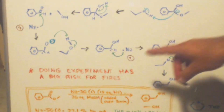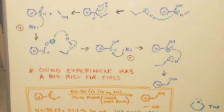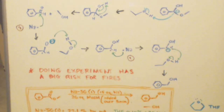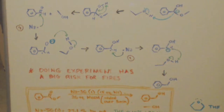Now I want you to read this and look at it very carefully. It says doing this experiment has a big risk for fires. This was the only method of doing an ester reduction to make alcohols before lithium aluminum hydride or sodium borohydride - before those hydrides. This is the way it was done, but you had a big chance of starting a fire with this experiment.